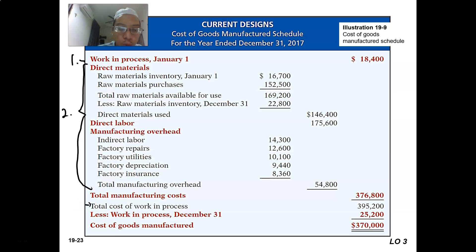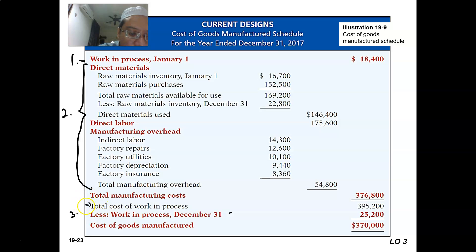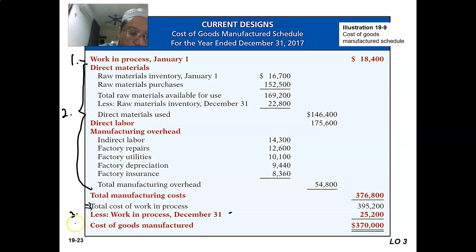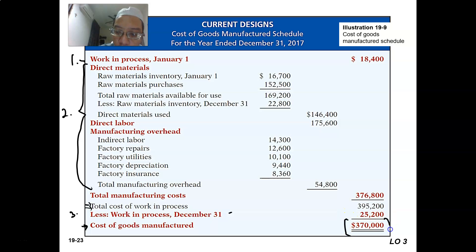At the end of the period, you also have inventory of items that have not been completed — this is number three. So you add one and two to get the total cost of work in process, then you minus number three — the work in process at the end of the period — because there are things that have not been completely done. You are left with number four: the cost of goods actually manufactured, cost of goods completed at the end of the period. This figure will be used to calculate the cost of goods sold in the income statement.